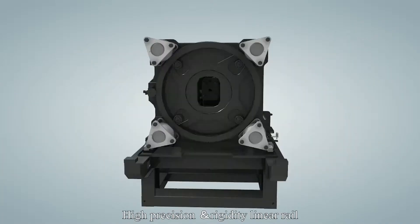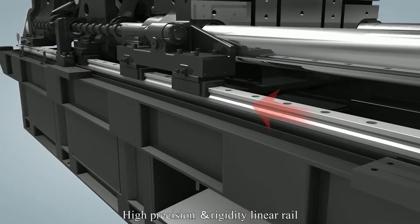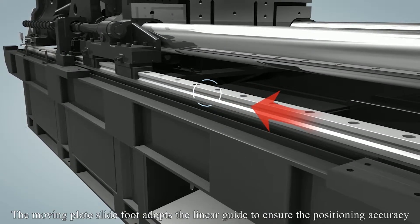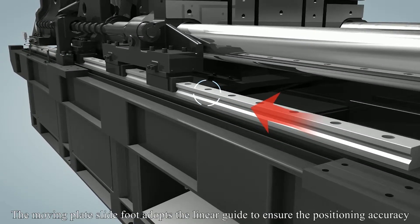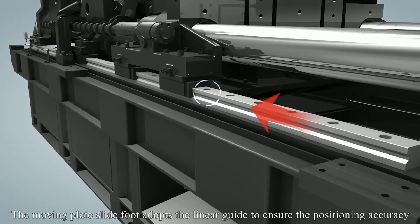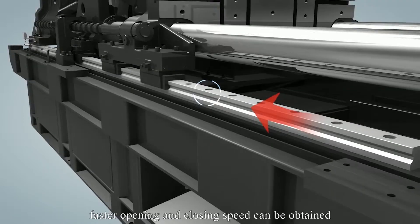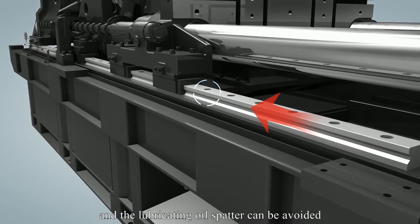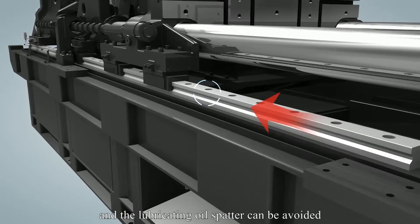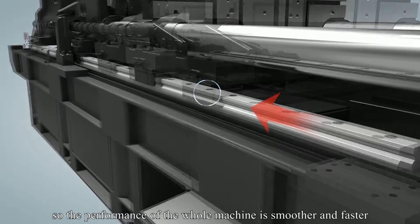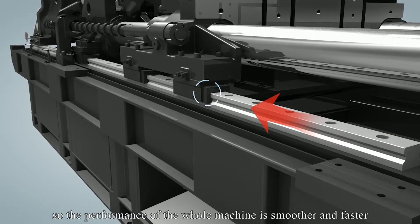High precision and rigidity linear rail. The moving plate slide foot adopts the linear guide to ensure the positioning accuracy. Because of the low resistance, faster opening and closing speed can be obtained, and the lubricating oil spatter can be avoided. So the performance of the whole machine is smoother and faster.